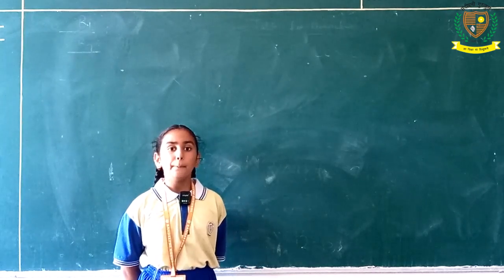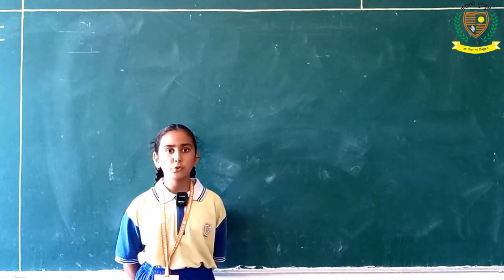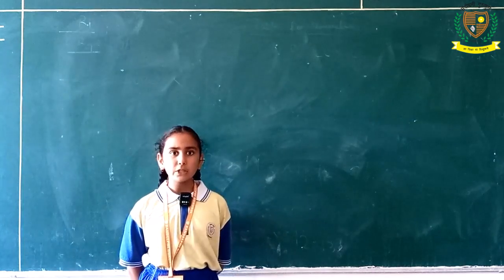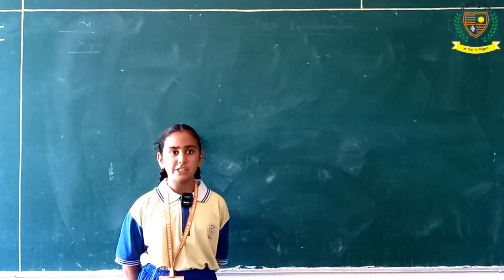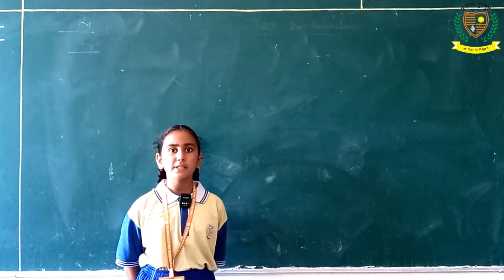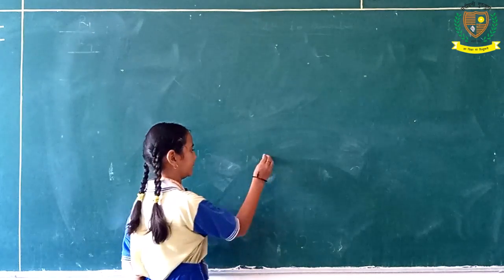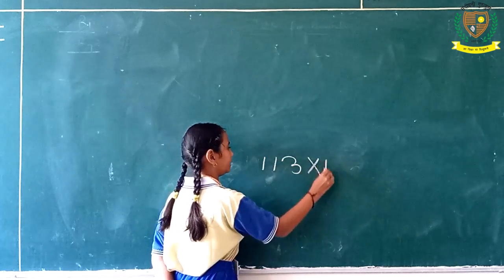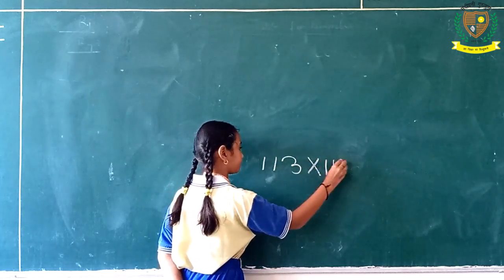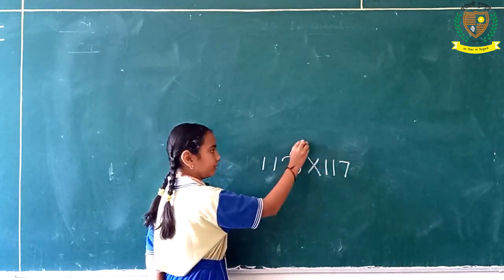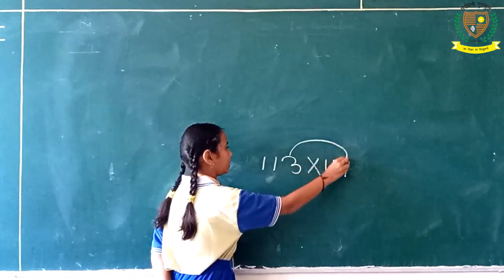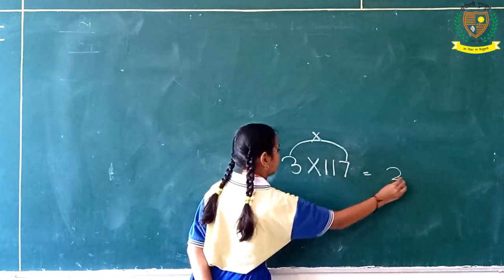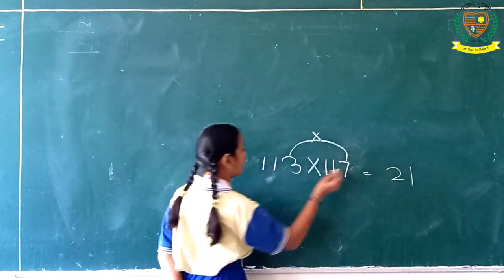Hello everyone, my name is Divya, student of grade 5. Today I will tell you a simple trick for multiplying three-digit numbers. First, we will take 113 multiplied by 117. We will multiply the last two digits: 3 sevens are 21.